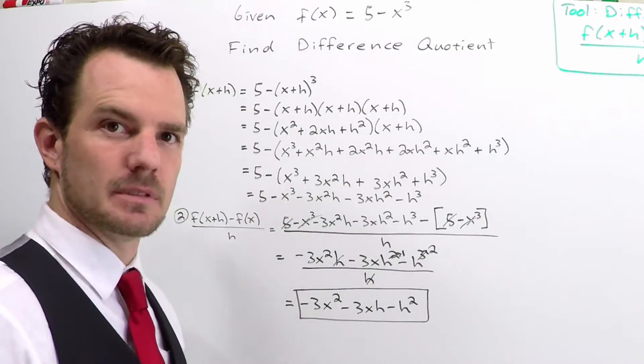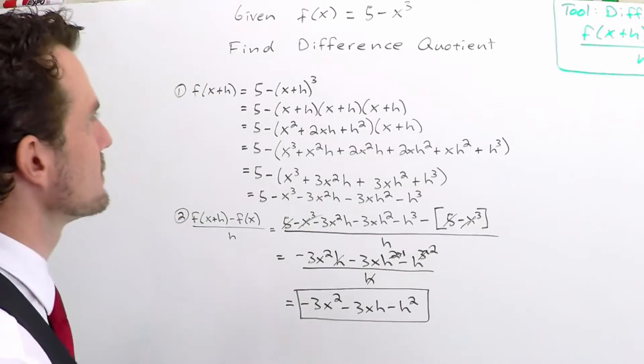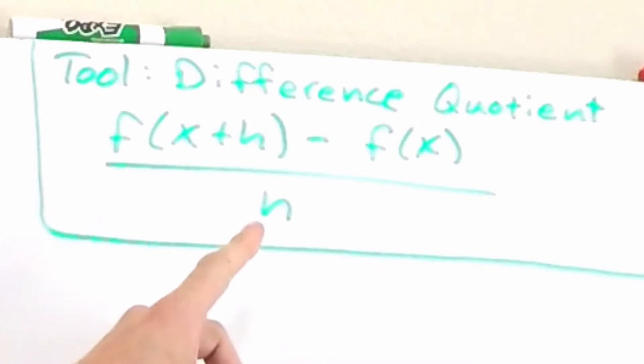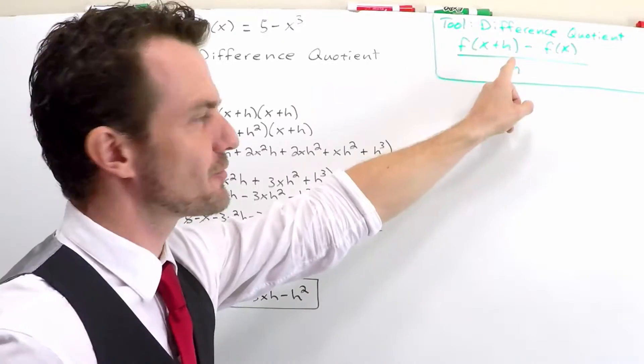So a bit of a beastly problem, but could have been a lot worse. Not too terribly bad. In this problem, the first way to approach the difference quotient, and this is on a personal level, is to get f of x plus h first.